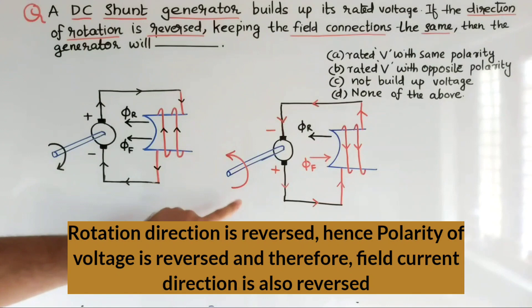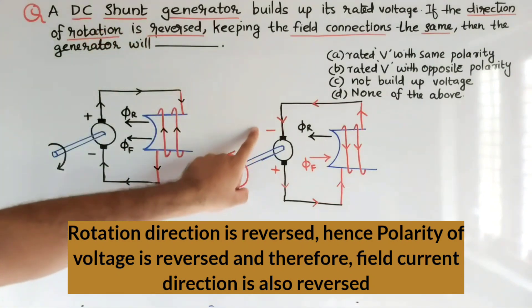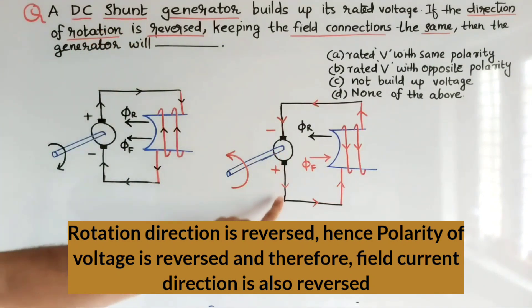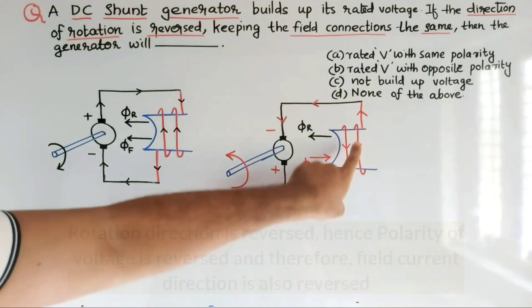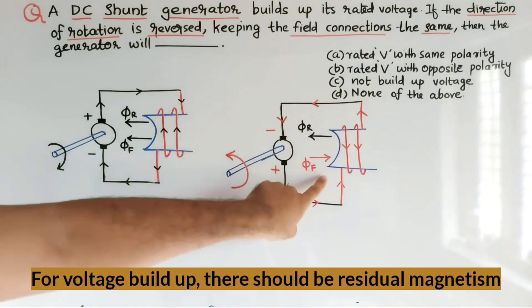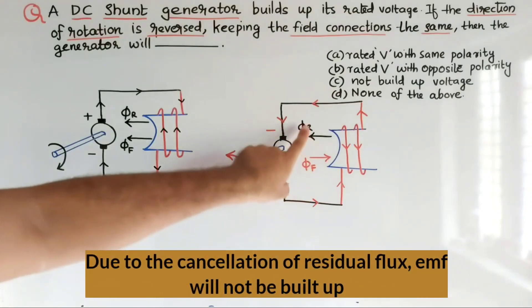Now, the direction is getting reversed as mentioned in the question, and the polarity is reversed also. The direction of the current is also reversed which is passing through the field winding. We can see that the direction of the flux is also reversed.